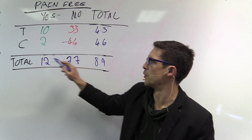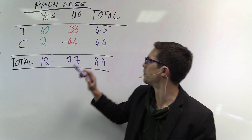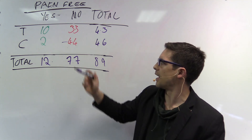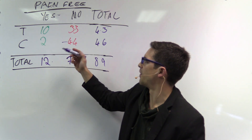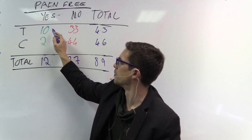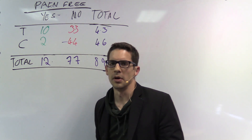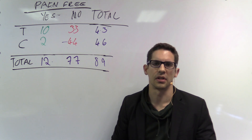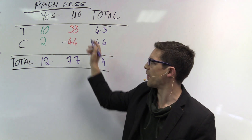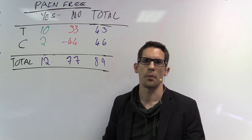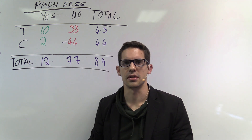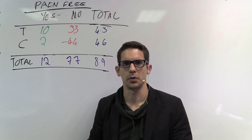So we had 89 total participants: 46 in the control group and 43 in the treatment group. Of those 43 people in the treatment group, 10 were pain-free after acupuncture. Now that the contingency table is complete, we can answer the questions.